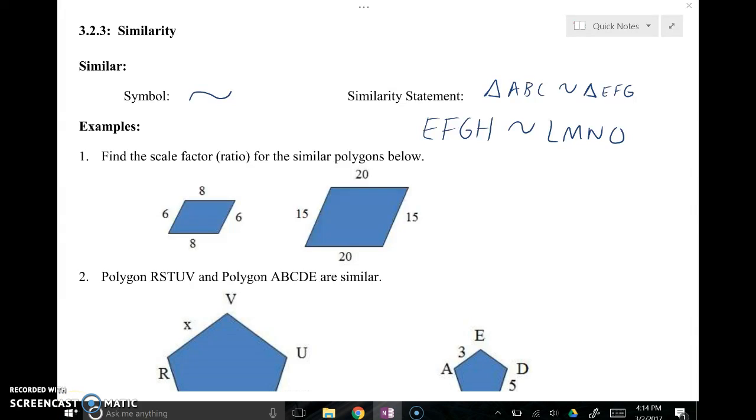Okay, we're going to do a video tutorial on similarity with polygons and specifically triangles eventually. Just a couple of things to make sure you know right away. The symbol for similarity is this tilde or squiggle here, so it's like the top of a congruence symbol. A similarity statement is the two things that are similar, so for instance if I'm talking about two triangles, this is what a similarity statement would look like. Triangle ABC is similar to triangle EFG.